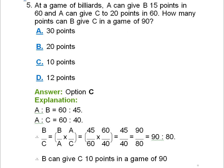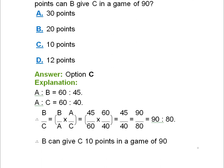Question 5: At a game of billiards, A can give B 15 points in 60, and A can give C 20 points in 60. How many points can B give C in a game of 90? Similarly, we calculate the ratios of A:B, A:C, and then B:C. The answer is B can give C 10 points in a game of 90 — option C.